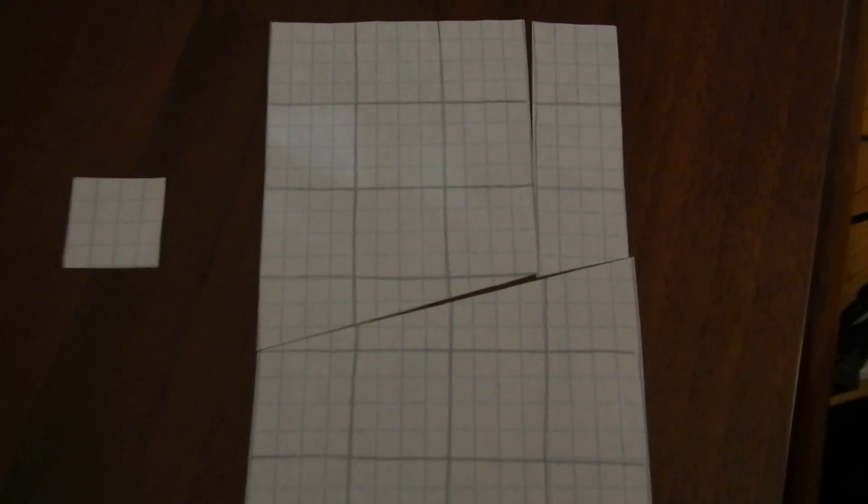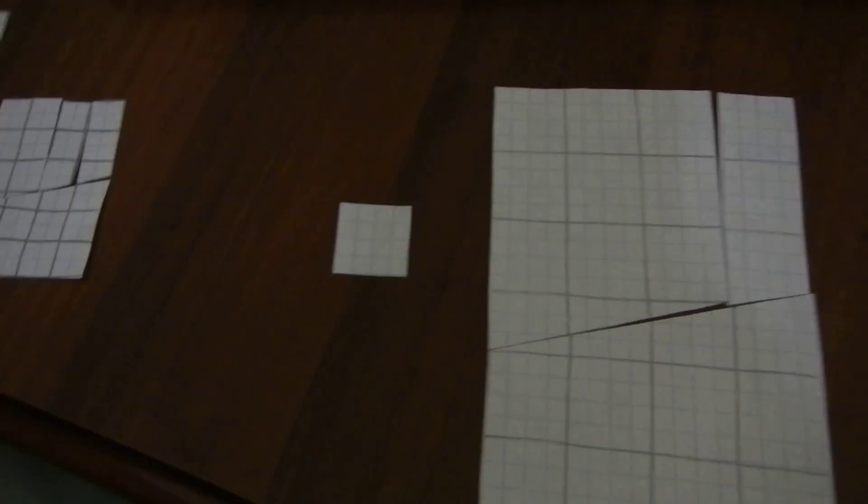When you only do it once, you don't really notice the difference in that diagonal row. But if you do it again, you magically create two pieces, and you begin to notice that row is half as big as all the other rows. And that is where the mysterious piece came from.